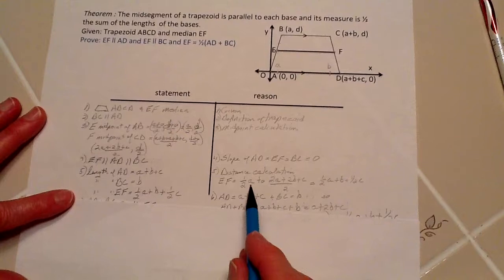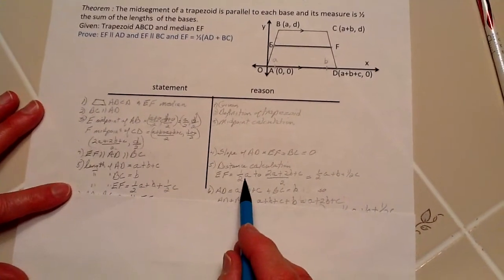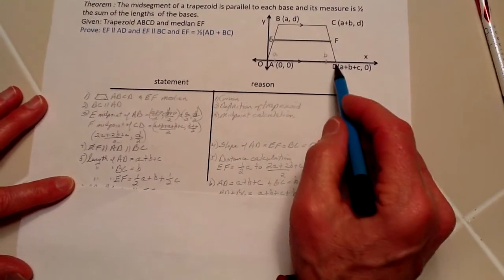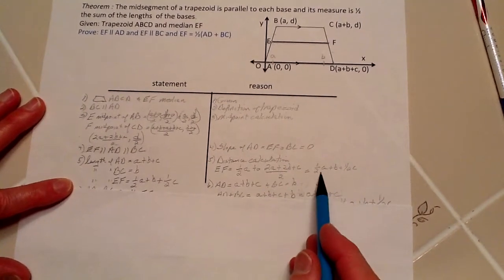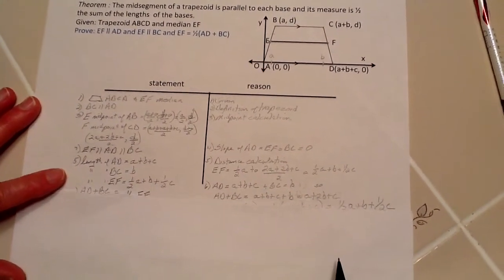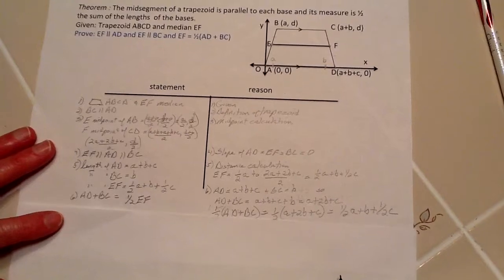As you can see, I added the one-half to the position over here, and that ends up being this, combining the like terms.